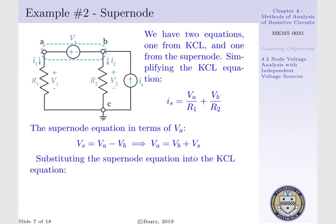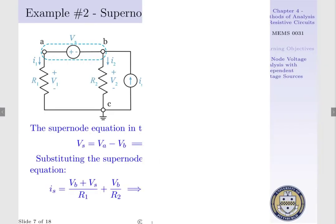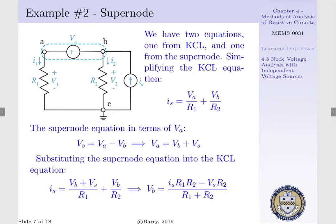Therefore, we have two equations and two unknowns. We can therefore substitute our supernode equation into our KCL equation, such that our source current is equal to Va, which can be expressed as Vb plus Vs by our supernode equation per R1, plus Vb per R2.